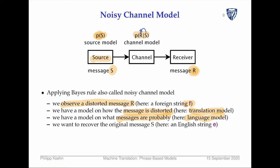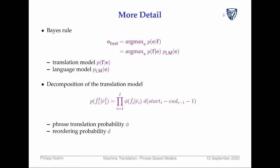If you compare these with the probabilities on the previous formulation, you get the same result. We are interested in the best translation — the argmax E — reformulated as the probability of the foreign sentence given English times the language model probability. So we have a translation model and a language model.